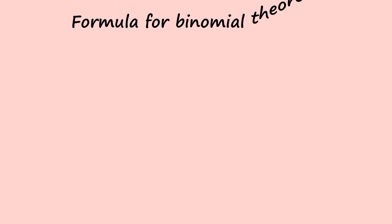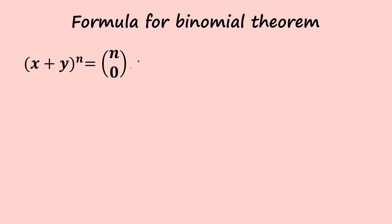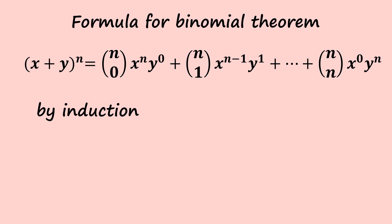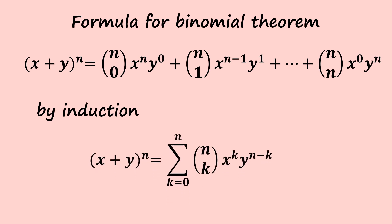The formula for the binomial theorem is: (x + y) to the power of n equals the sum from k=0 to n of n choose k times x to the power of k times y to the power of n minus k. Expanded, this is n choose 0 times x^n times y^0, plus n choose 1 times x^(n-1) times y^1, and so on, up to n choose n times x^0 times y^n.